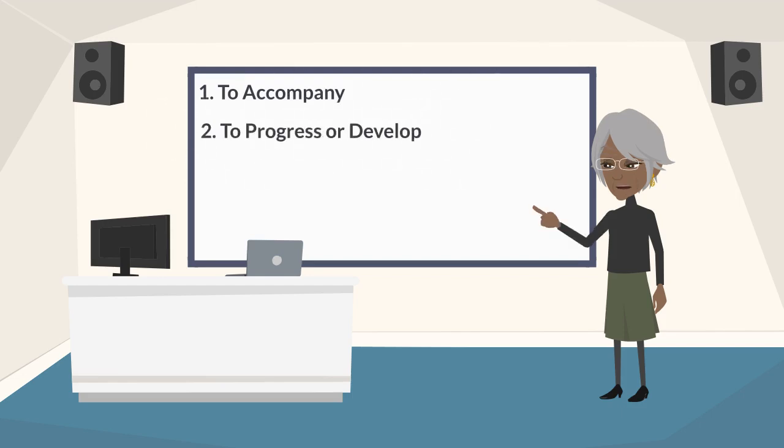Second meaning of come along refers to the progress or development of a situation, often indicating improvement or advancement. Our last meaning of come along is about the act of appearing or arriving at a place.